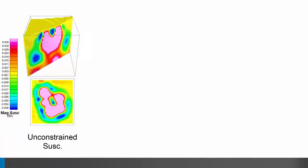Sean and Kit began with the conventional unconstrained susceptibility model for the magnetic field data. They were able to recover a high susceptibility body with a reasonable surface definition, but the conventional susceptibility modeling assumed magnetization was purely induced and was unable to account for any remnant magnetization, which was suspected for this kimberlite. Furthermore, the unconstrained susceptibility model was unable to recover a pipe-like shape at depth and required the presence of unrealistic negative and very high positive susceptibility values.